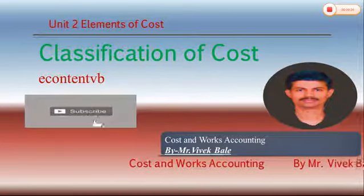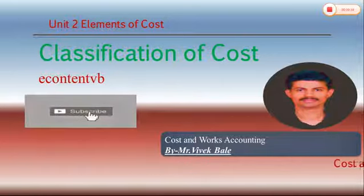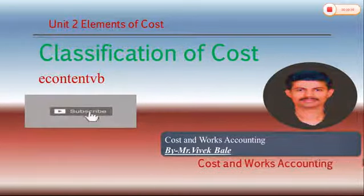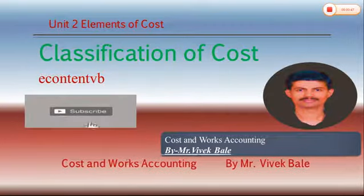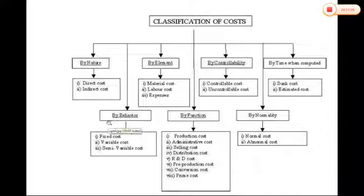We have already learned the classification of cost through different phases across previous videos. Today I am going to show you all the costs in one single chart with a very short description or explanation on each element. Here, as you can see, this is a chart of classification of cost, and we have classified cost on the basis of nature, element, controllability, time, behavior, function, and normality.